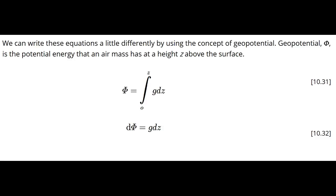Finally, we note that g dz is just a differential of the geopotential, phi, which has units of meters squared per second squared, which are the same units as energy divided by mass. So changes in height on a constant pressure surface are the same as changes in geopotential as well on a constant pressure surface.